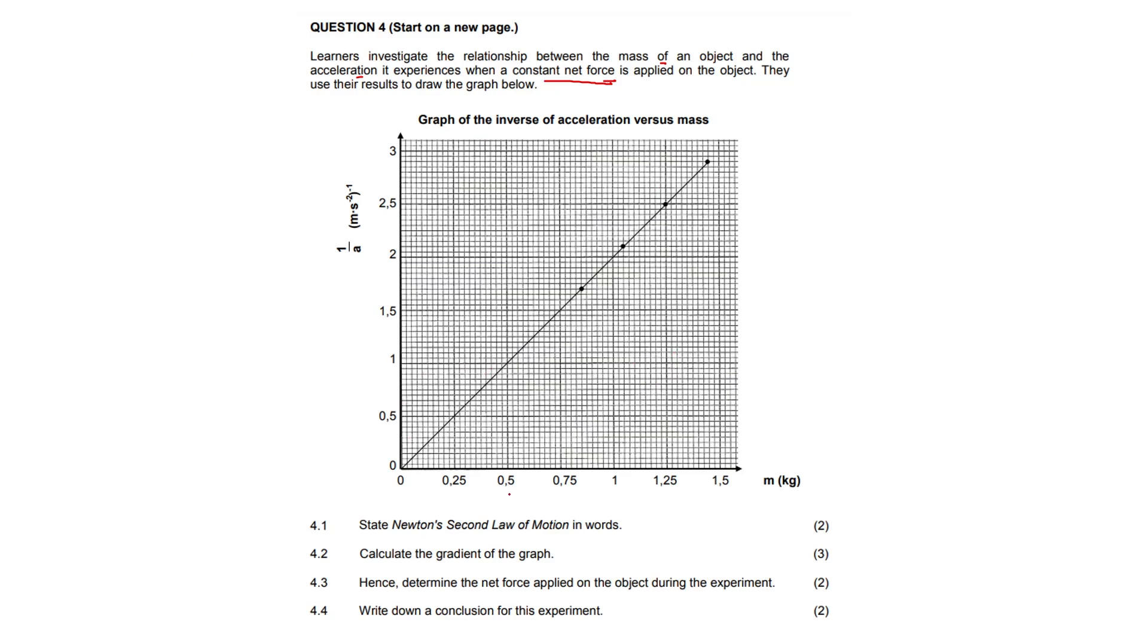4.1. State Newton's second law of motion in words. When a net force acts on an object, the object will accelerate in the direction of the force and the acceleration will be directly proportional to the net force and inversely proportional to the mass of the object.